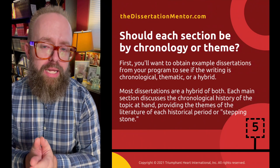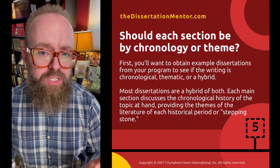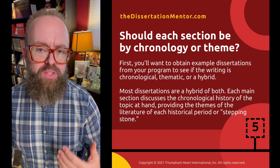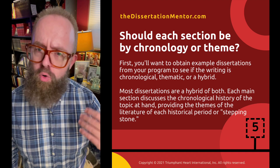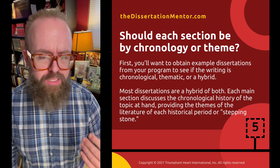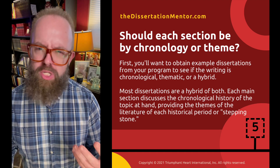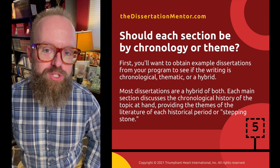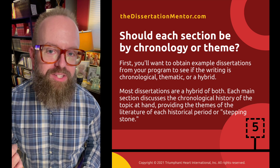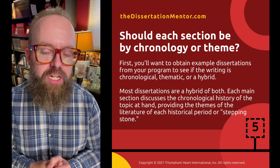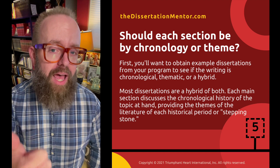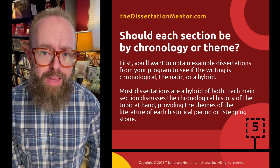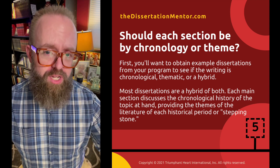A very common question at this point is: I understand basically how to organize my literature review, but what about the sections themselves? Should they be done chronologically, by theme, or a hybrid of both? In fact, most dissertation lit reviews are a hybrid of both chronology and thematics. Each section is probably going to talk about the history of that idea by laying out the themes that came out practically and via research over time.